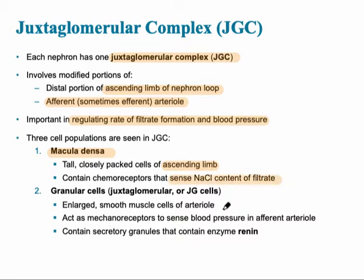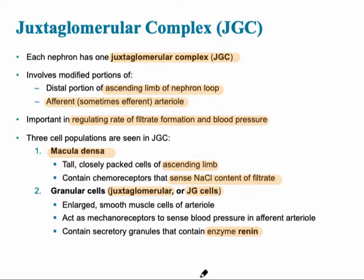There are also granular cells, also called juxtaglomerular or simply JG cells. These are smooth muscle cells of the arteriole, and they act as mechanoreceptors that sense blood pressure. They have granules that contain the chemical renin, which can trigger the renin-angiotensin-aldosterone system.